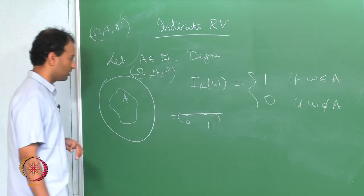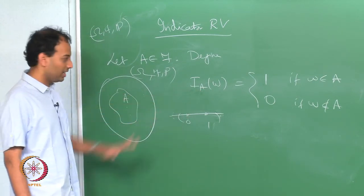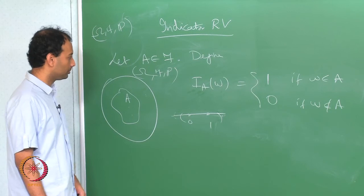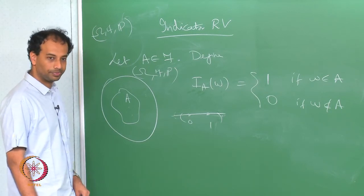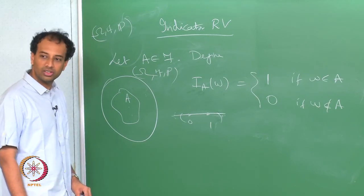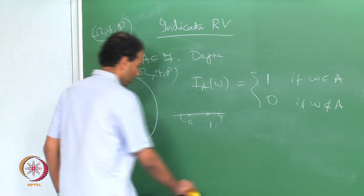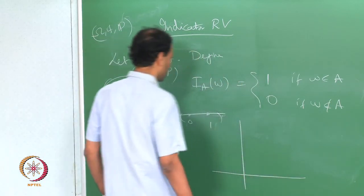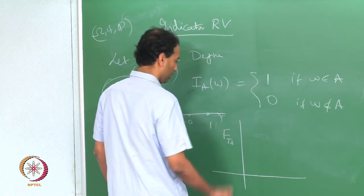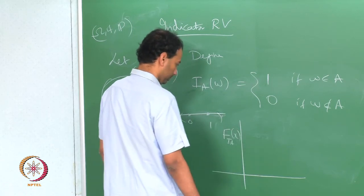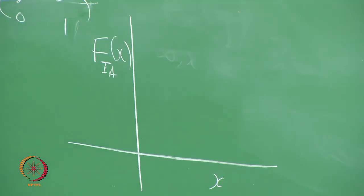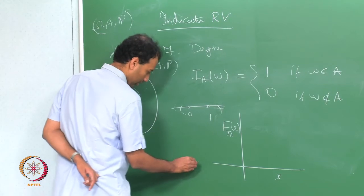We have established that the indicator function of an F-measurable event A is a random variable. What will the CDF of this indicator look like? If x is less than or equal to 0, the function will be at 0.